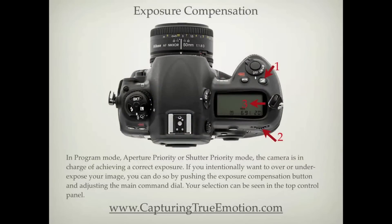In program mode, aperture priority, or shutter priority mode, the camera is in charge of achieving a correct exposure. If you intentionally want to over or underexpose your image, you can do so by pushing the exposure compensation button and adjusting the main command dial. Your selection can be seen in the top control panel.